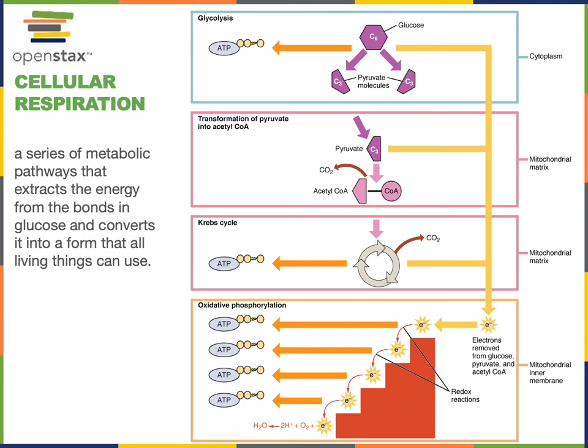Acetyl CoA will then enter into a metabolic pathway known as the Krebs cycle, or the citric acid cycle. During the Krebs cycle, acetyl CoA will be oxidized, producing two molecules of carbon dioxide.